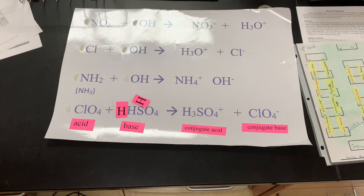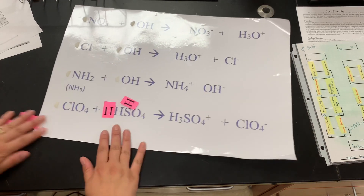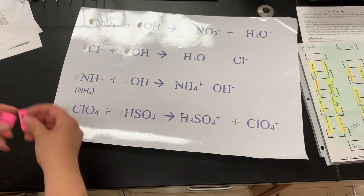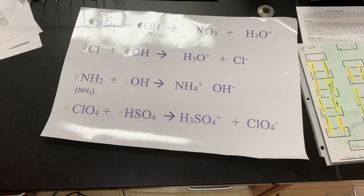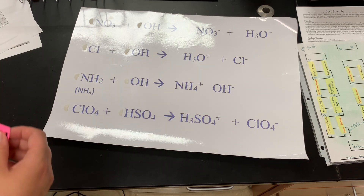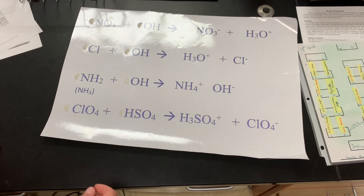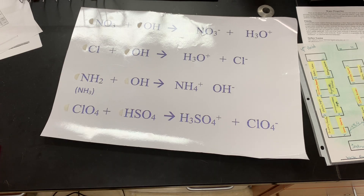This is largely what you're going to be doing with your assignment — only without the cards. You're going to be looking for where the hydrogen went. Whoever loses the hydrogen is the acid; whoever takes the hydrogen is the base. On the other side, whoever is without their hydrogen is the conjugate base, and whoever has an extra hydrogen is the conjugate acid.